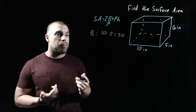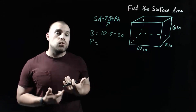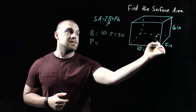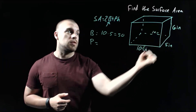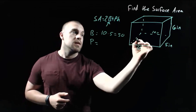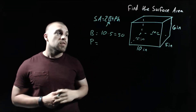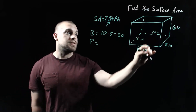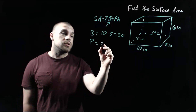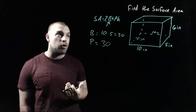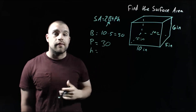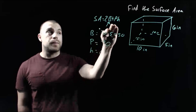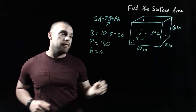The next thing we need to find is the perimeter of our base. Since we're dealing with a rectangle, we know that opposite sides have to be congruent. So if this front piece is 10 inches, the piece on the back is also 10 inches. If the piece on the right is 5 inches, then the piece on the left also has to be 5 inches. Adding all those together — 10 plus 10 plus 5 plus 5 — we end up with a perimeter of 30. Then the last thing we need is the height of the prism itself, which is the 6-inch length.